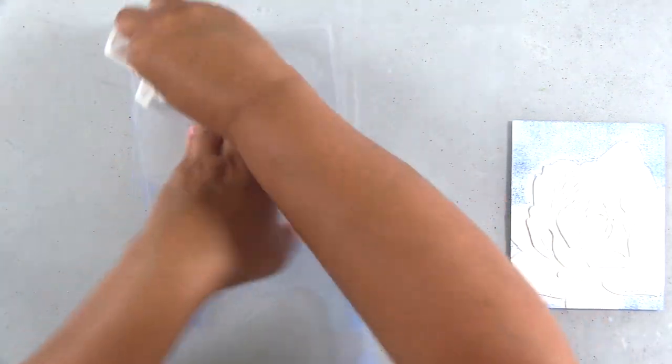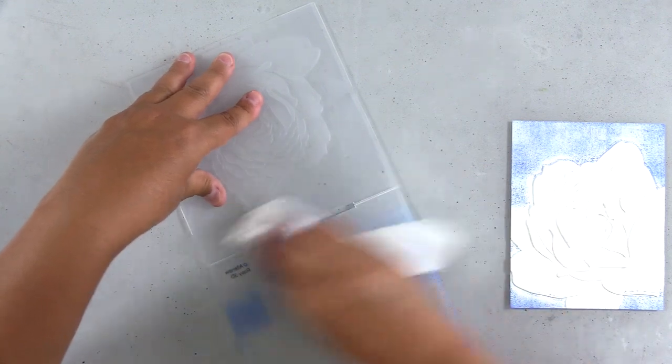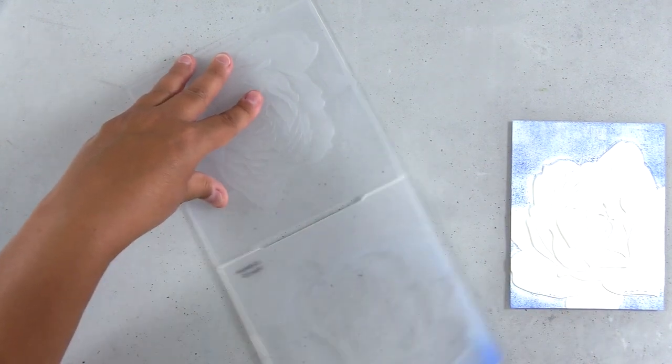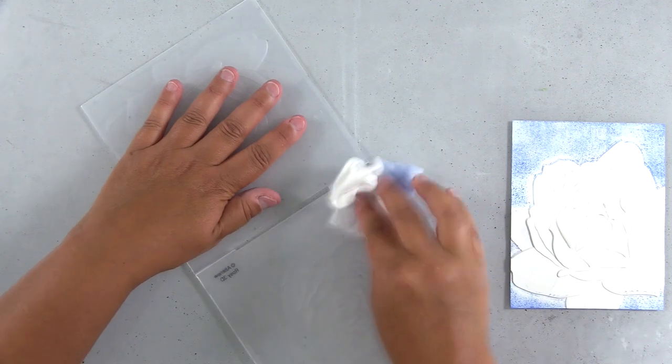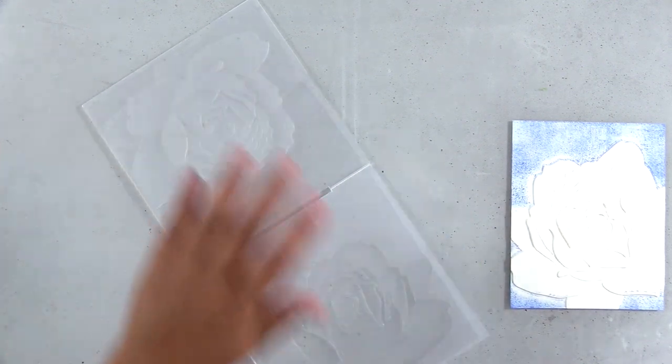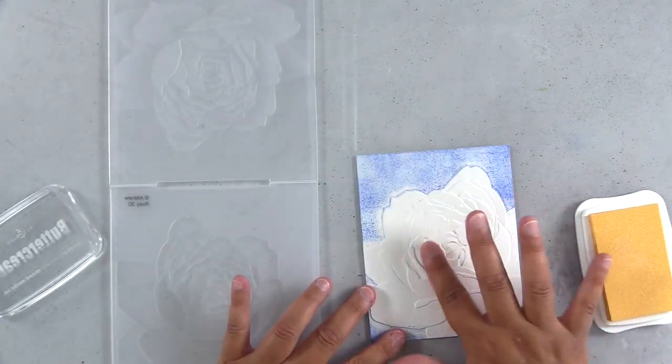You can clean off your embossing folders really easily with a baby wipe. That's what I'm using here. You could also use a microfiber cloth or paper towel. Whatever you have on hand, the ink wipes off very easily.